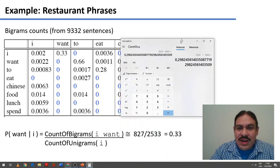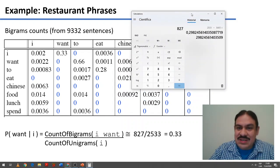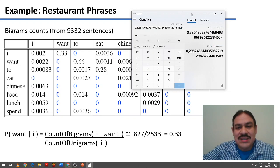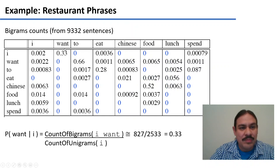827 divided by 2533 is approximately 33%, which is what we see here, 0.33. So this 0.33 is the probability of that bigram, which again is the probability of the word want given the word I.